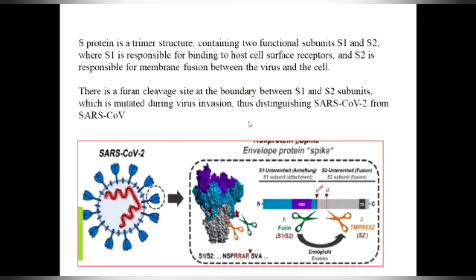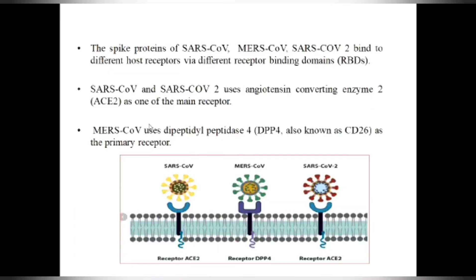The mutation of the furin cleavage site distinguishes SARS-CoV-2 from the SARS coronavirus that emerged in 2002. The spike proteins of SARS-CoV-2, MERS-CoV, and SARS-CoV bind to different host receptors via different receptor binding domains — this will definitely be a question in one of your exams. For SARS-CoV-2 and SARS-CoV, angiotensin-converting enzyme 2 (ACE2) is the main receptor. For MERS-CoV, it uses a different receptor — DPP4, also known as CD26 (dipeptidyl peptidase 4), which is its primary receptor.